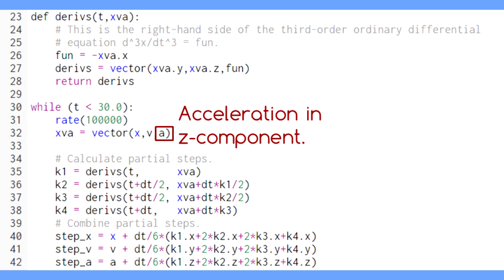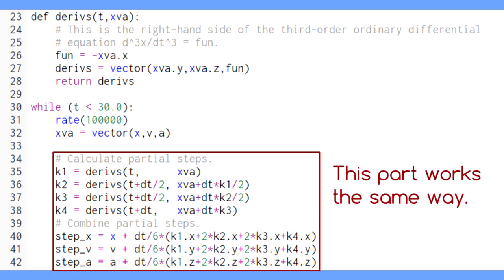We just store the acceleration in the z component of our vector with position and velocity. The machinery of the Runge-Kutta method works exactly the same way, since it acts on this entire vector at once.